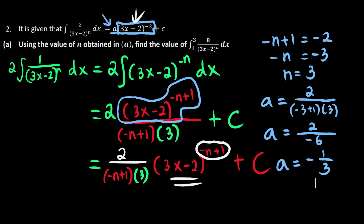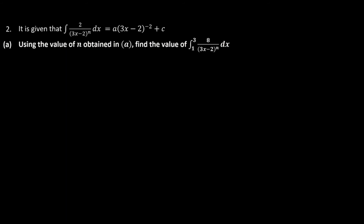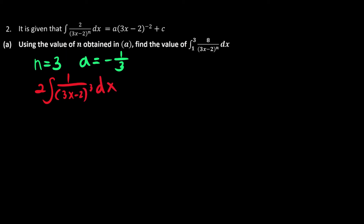So to summarize: n is equal to 3, and a is equal to negative 1 over 3. Therefore the integration of 2 times 1 over (3x minus 2) to the power of 3 with respect to x equals negative 1 over 3 times (3x minus 2) to the power of negative 2 plus c.